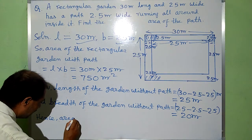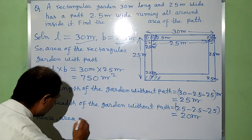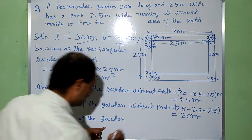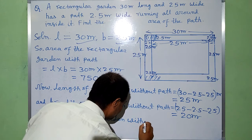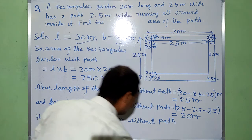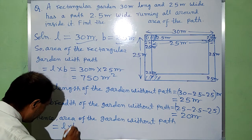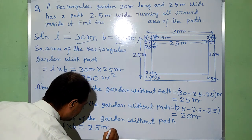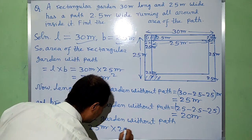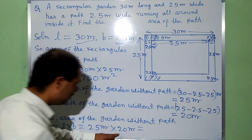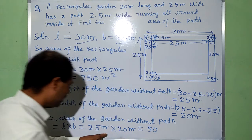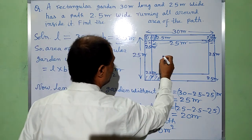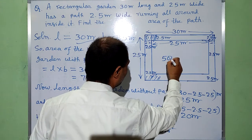Hence, area of the garden without path will be L into B. In this case, L is 25m and B is 20m. 25 times 20 is 500m². This area is 500m² only.